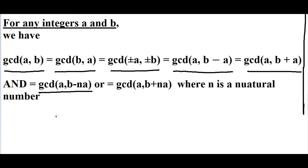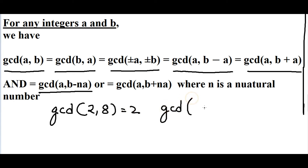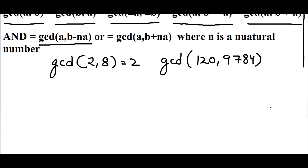How to utilize this formula: suppose I said find gcd(2, 8) — you'd say 2, very easy. Now let's make it bigger: gcd(120, 9784). That's pretty big! You utilize the property that you can subtract n times a from b to make it smaller. The question is which n to use — don't try prime factorization for large numbers; it's too big. Let's work with 120.